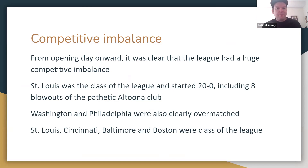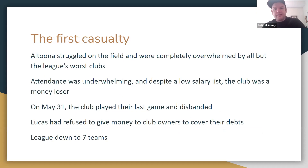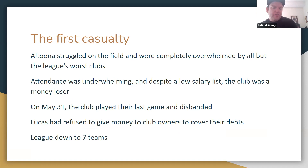The competitive imbalance became the defining hallmark of the league. From opening day onward, St. Louis dominated — they started the season 20 and 0, which included eight blowout losses handed to the pathetic Altoona club, outscoring them by over 100 runs in those eight games. Washington and Philadelphia were clearly overmatched by the stronger clubs. St. Louis, Cincinnati, Baltimore, and Boston were the four clubs that stayed in the league for the whole season, with St. Louis and Cincinnati a clear cut above the rest.